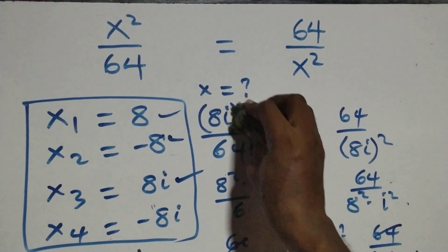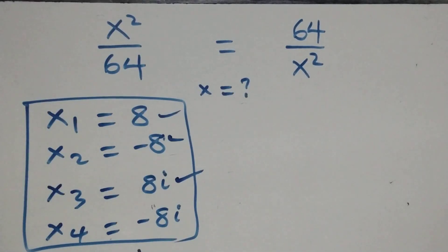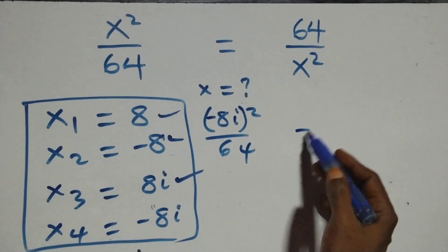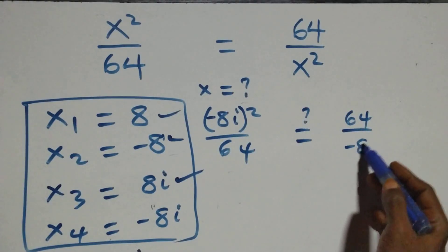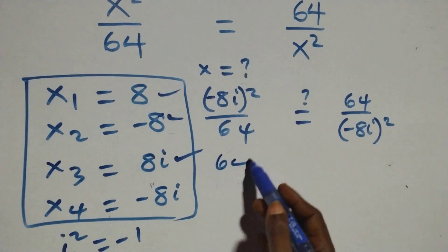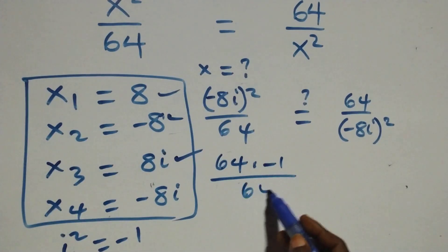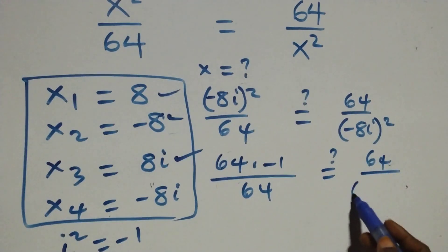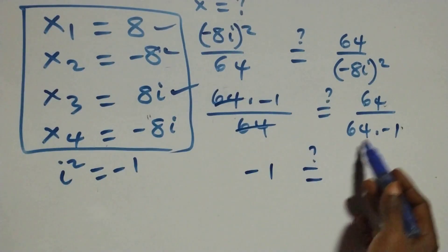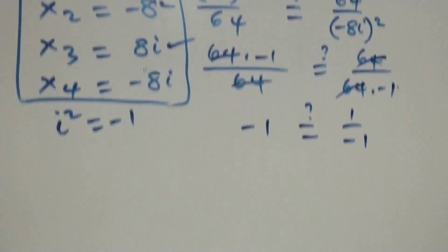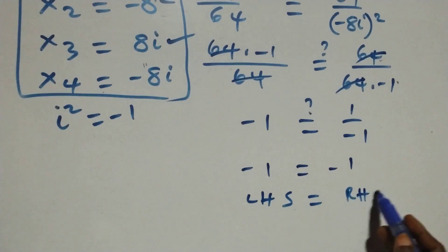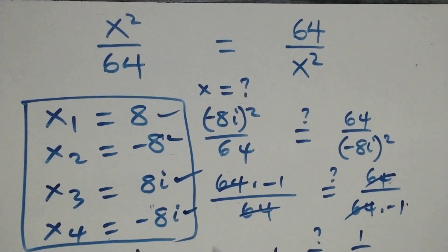Substituting x equals minus 8i: what we have becomes (minus 8i) squared over 64 equals 64 over (minus 8i) squared. Squaring turns the minus to plus, giving 64 times i squared (which is minus 1) over 64. The 64s cancel, leaving minus 1 on the left. On the right, 64 over (64 times minus 1) also gives 1 over minus 1, which is minus 1. Left-hand side equals right-hand side, so x equals minus 8i also satisfies the given problem.